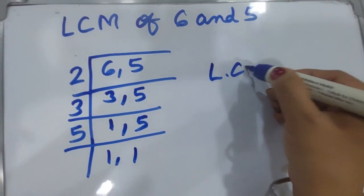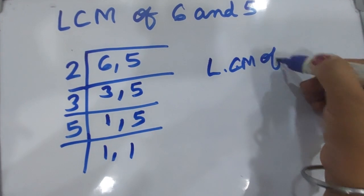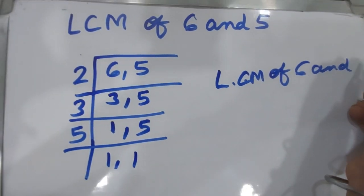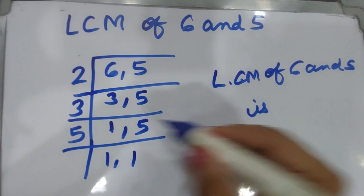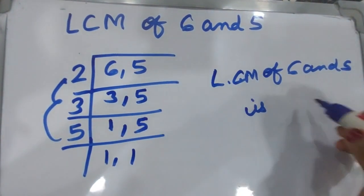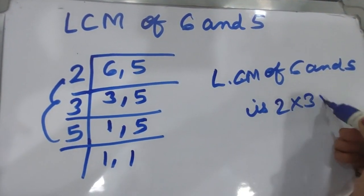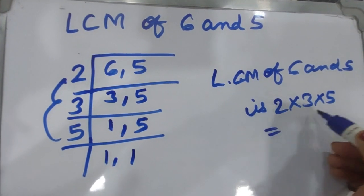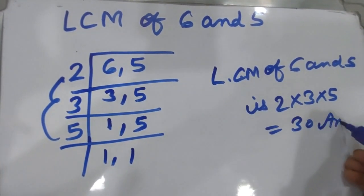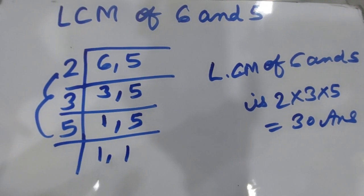Now, how do you write the LCM? The LCM of 6 and 5 is found by multiplying all these three numbers together: 2 times 3 is 6, and 6 times 5 is 30. So 30 is your answer.